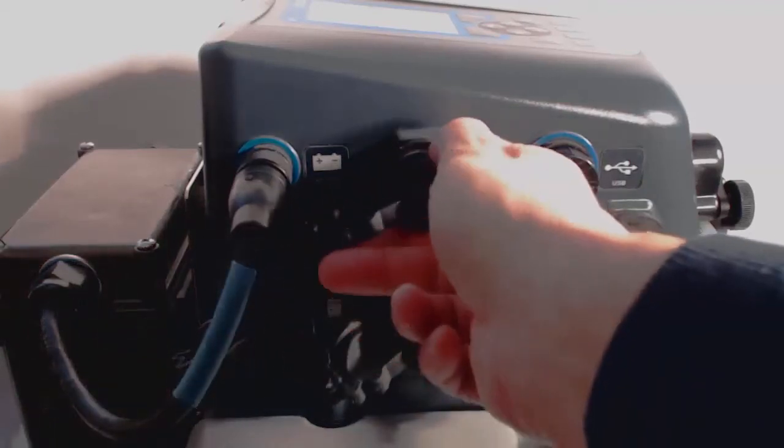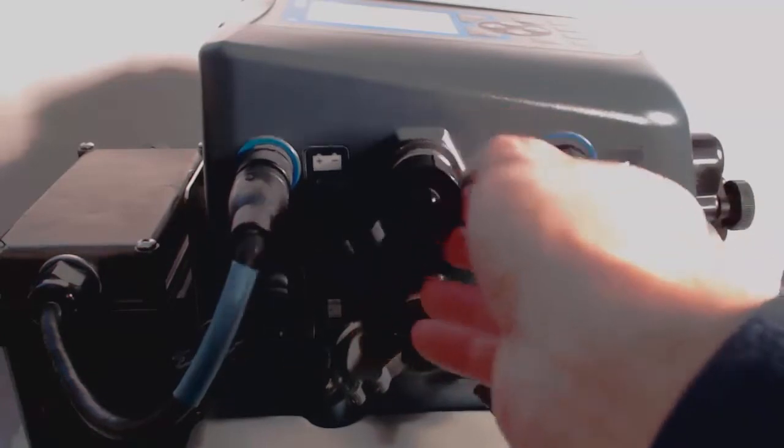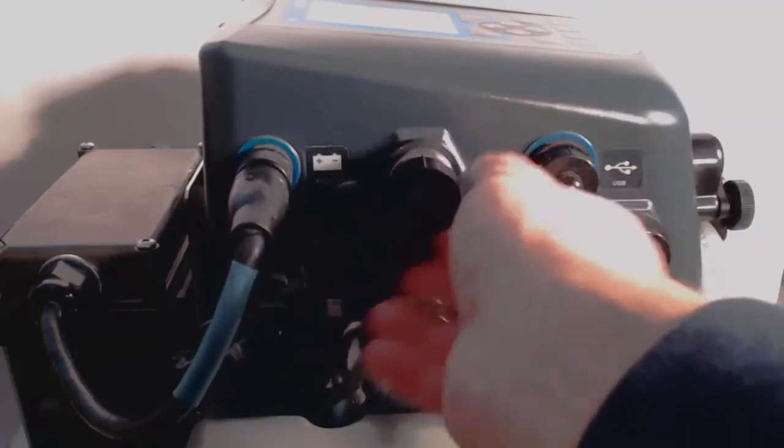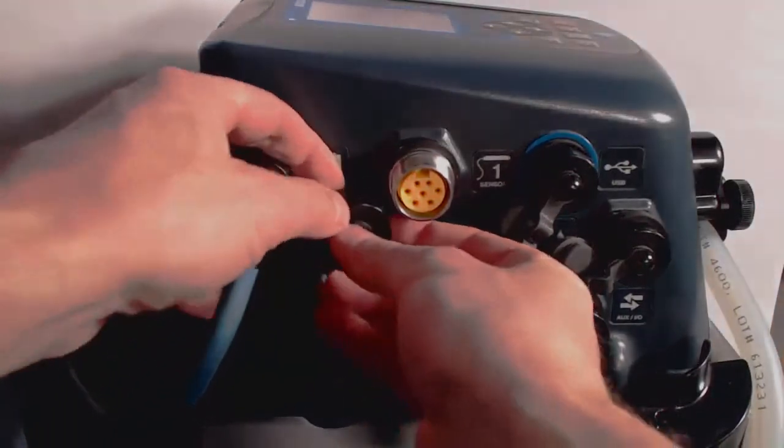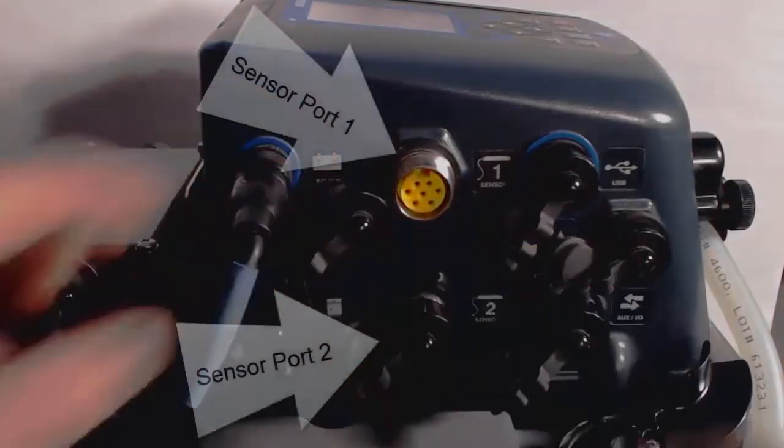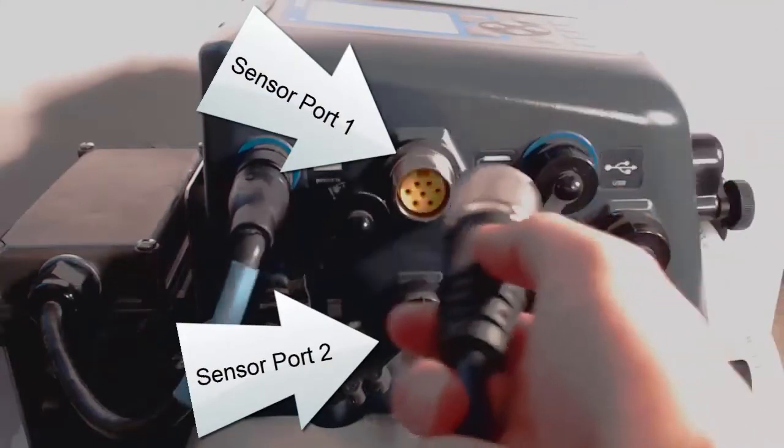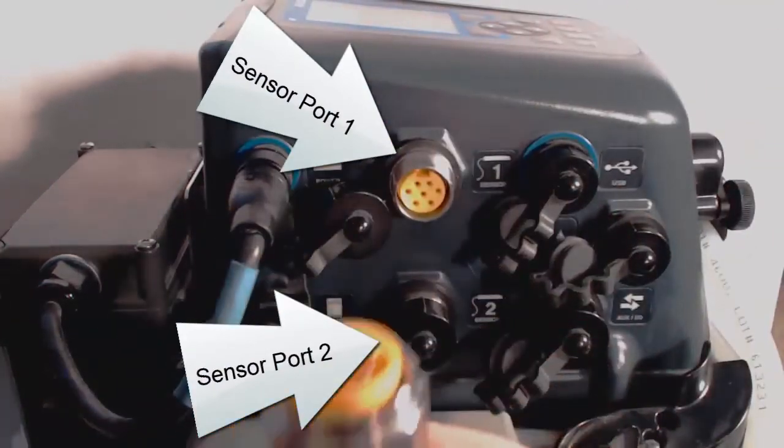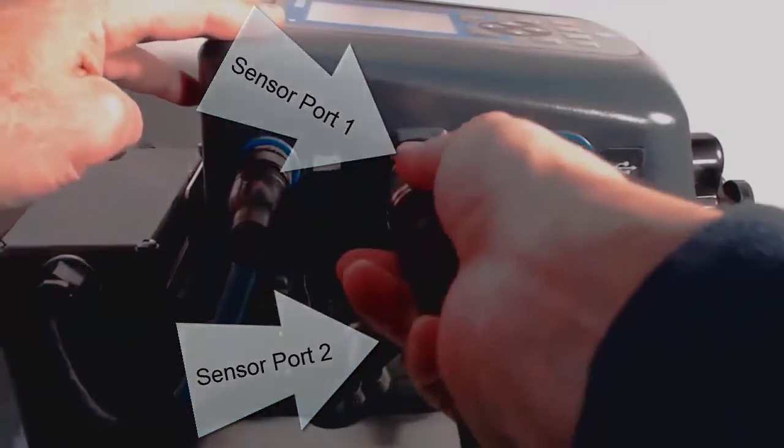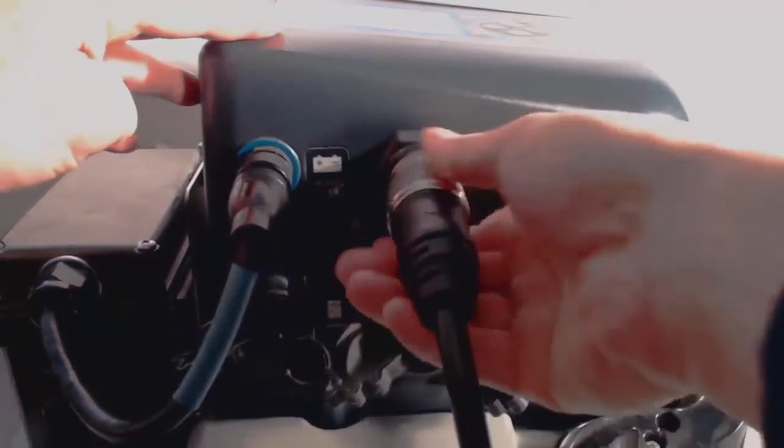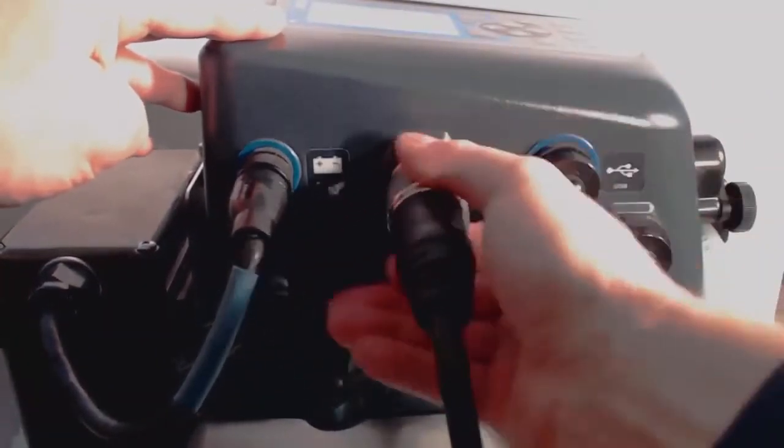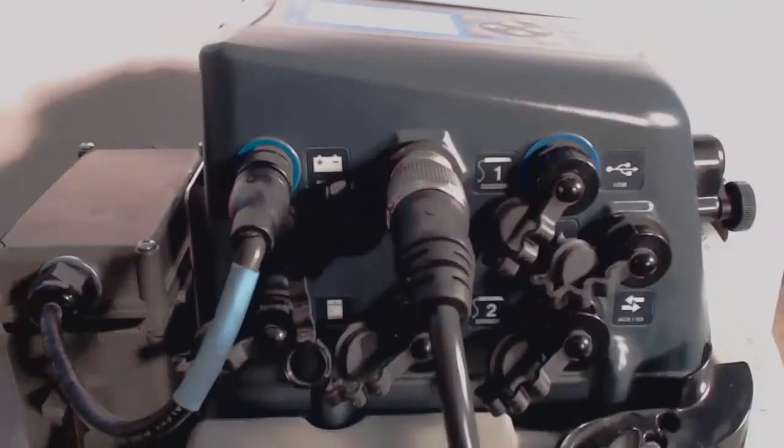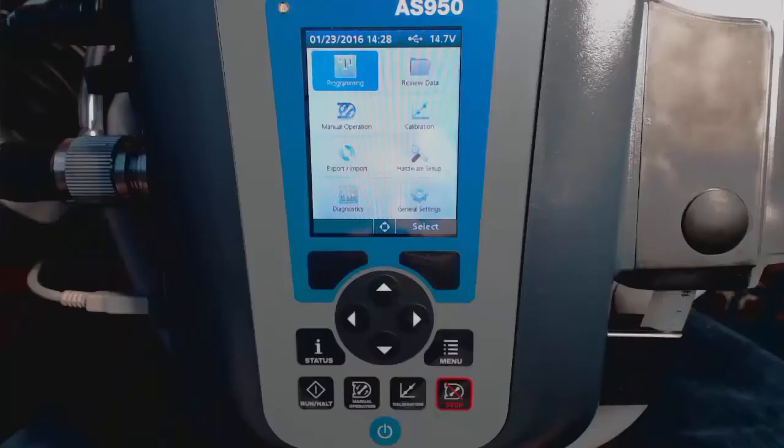The first step is to connect the AV9000 and sensor to the AS950. Next, we'll set up our measurement data logging preferences.